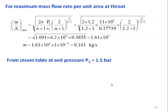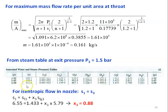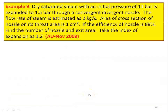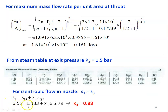From the steam table at exit pressure P3 = 1.5 bar: Vg = 1.159, Hf = 467.1, Hfg = 2226.3, Sf = 1.433, Sfg = 5.79. For isentropic flow S1 = S3, so 6.55 = 1.433 + x3 × 5.79. Solving, x3 = 0.88, so the quality of steam at the exit is 0.88.